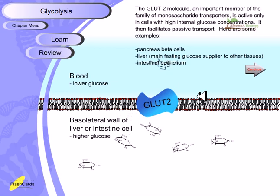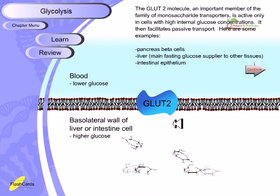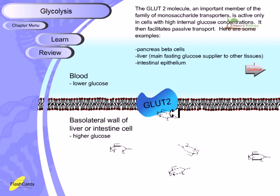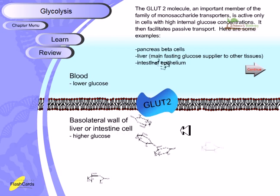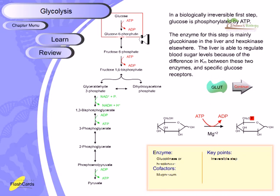GLUT2 is an important monosaccharide transporter. It is active only in cells with high internal glucose concentrations and facilitates passive transport — moving glucose out when intracellular glucose is high. GLUT2 is found in pancreatic beta cells, liver cells, and intestinal epithelium cells. When there is high intracellular glucose pressure, GLUT2 receptors open and bring glucose outside the cell.